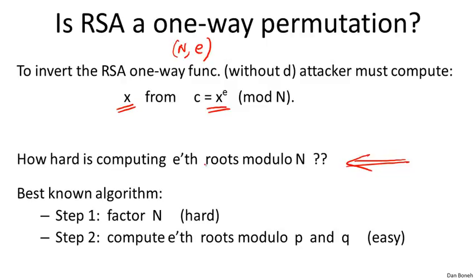It turns out the best algorithm for this problem requires us to first factor the modulus n, and then once we factor the modulus, it's easy to compute the e-th root modulo p and modulo q, and then given both those e-th roots, it's easy to combine them using the Chinese Remainder Theorem and recover the e-th root modulo n. So once we're able to factor the modulus, computing e-th roots modulo n becomes easy.